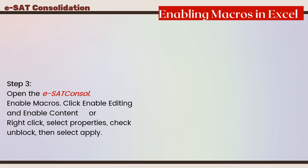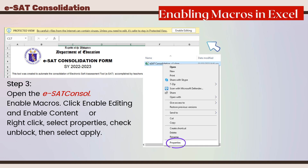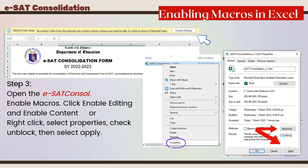The third step is to open the ESAT console and enable macros. Click Enable Editing and Enable Content. Or, right-click, select Properties, check Unblock, and then select Apply.